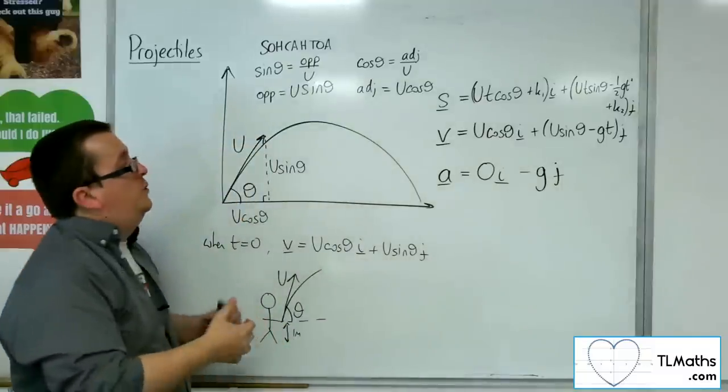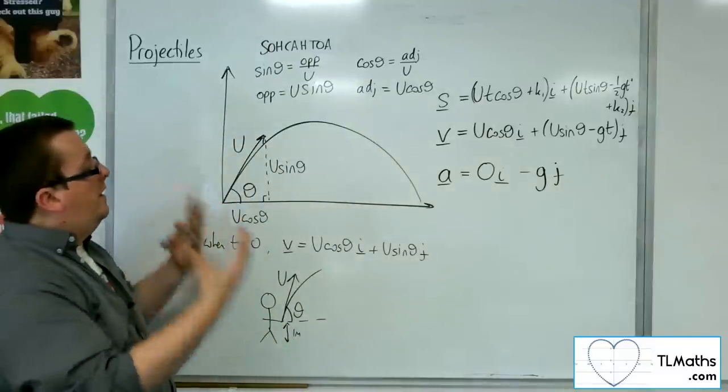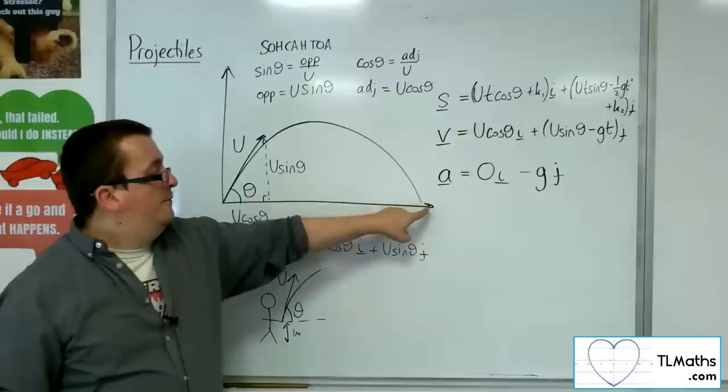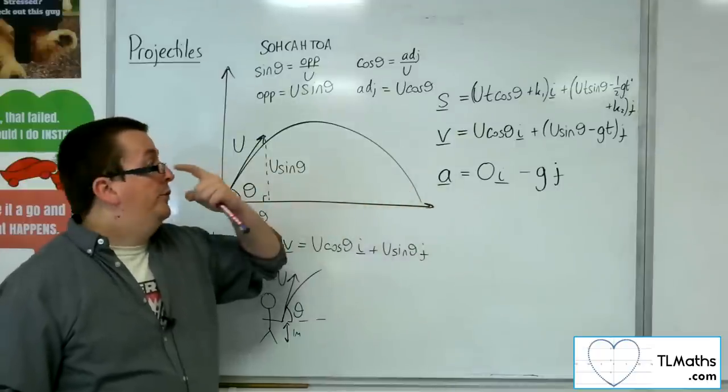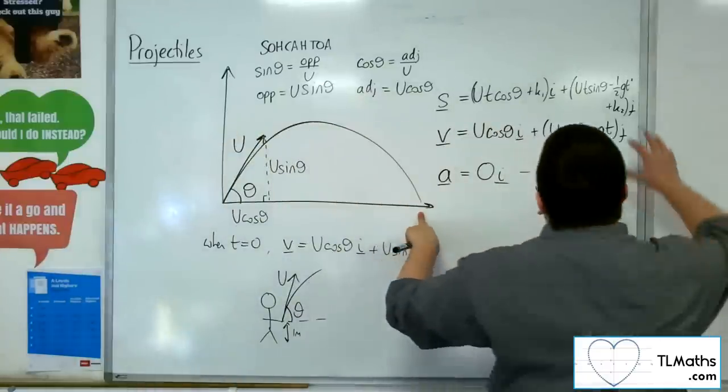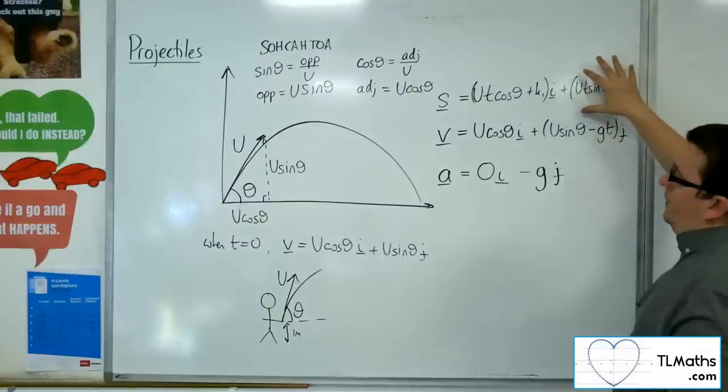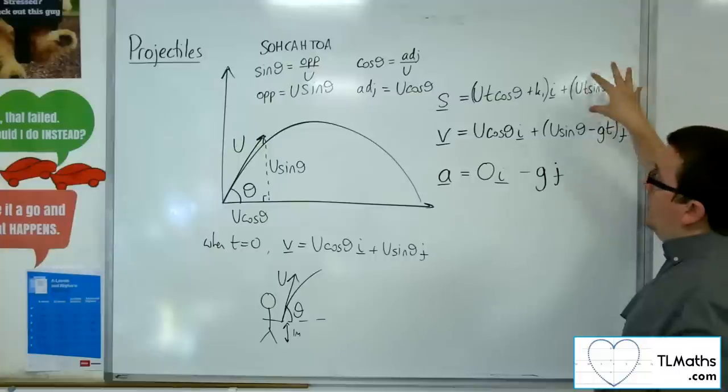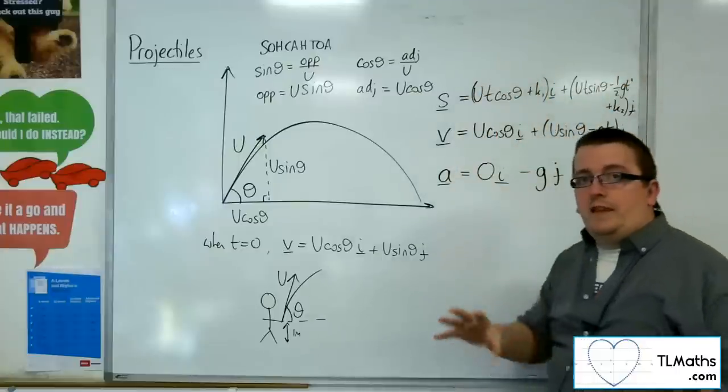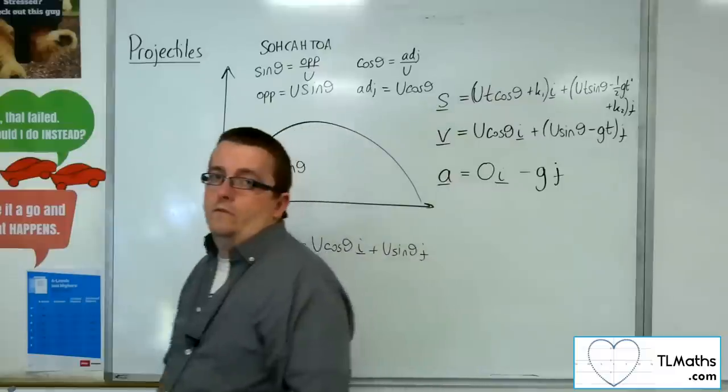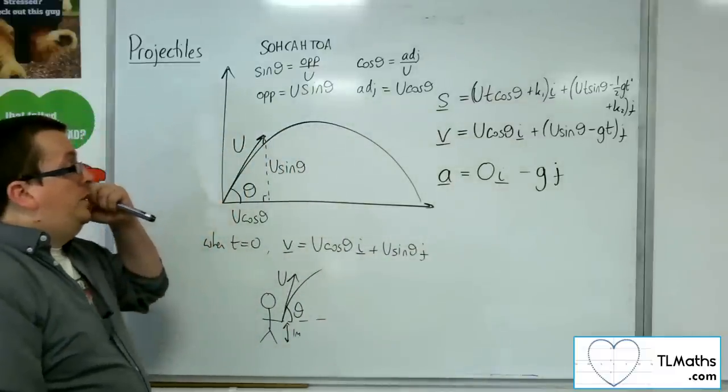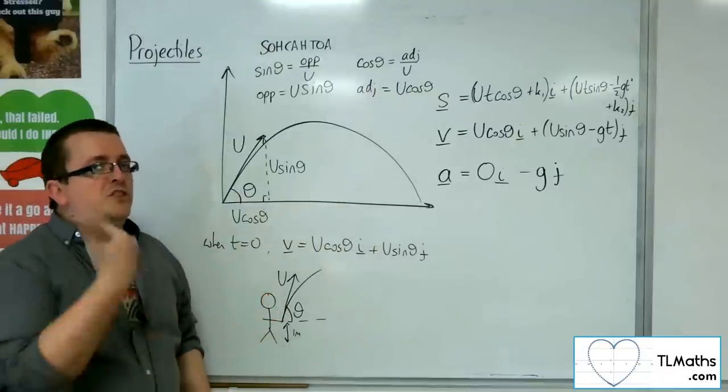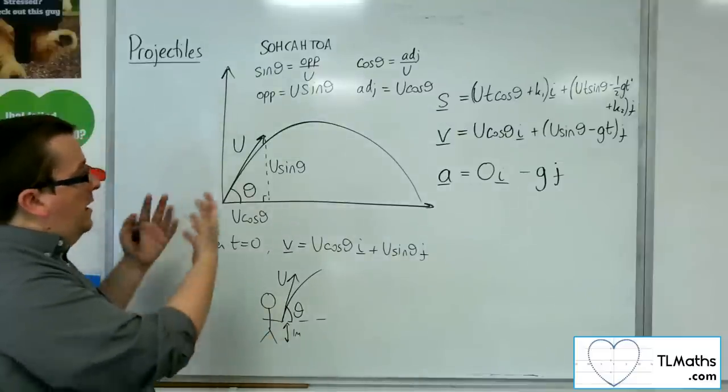So, this is how you could then figure out the height of the particle, well, the highest point it reaches. You could figure out the furthest distance that it travels. Because at that point, the j coordinate of the particle's motion will be 0. And so, you'd be able to find that time, substitute it into the i component, and it tells you how far you've gone. So, you can utilise this formula in order to solve problems using projectiles.